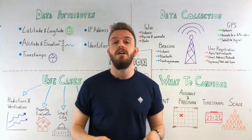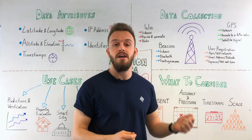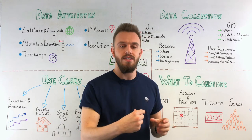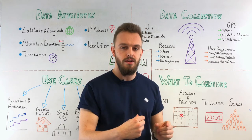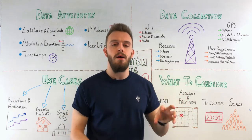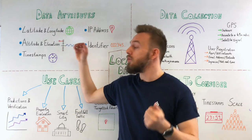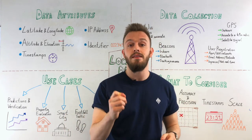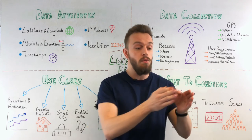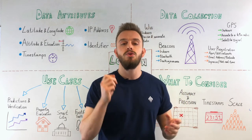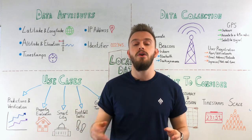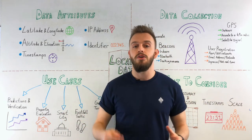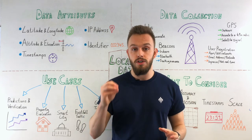When talking about location data quality, there are two things you must consider: accuracy and precision. Accuracy is how close the reading of the device is to the device's actual location. Precision is any other information about the device's location — so this could be its coordinates, its altitude or elevation, or even timestamps. Timestamps are very important in their own right: if you want to track movement over time, you need to know when that behaviour occurred, and they're also critical for tracking continuously moving objects in real time. Finally, scale — when you're purchasing location data, you must make sure that you're purchasing it on a scale appropriate for what you're going to be using it for.